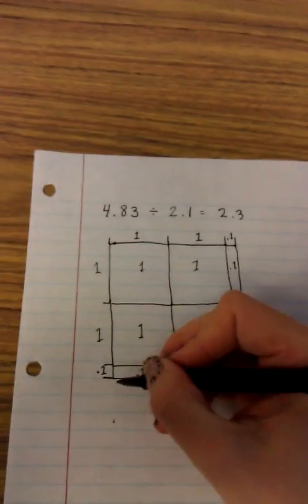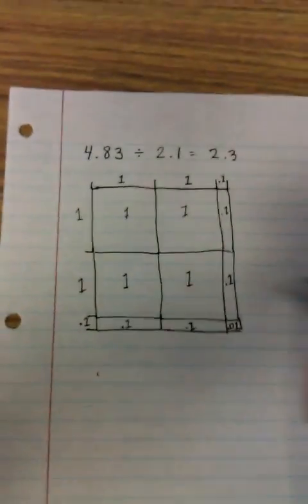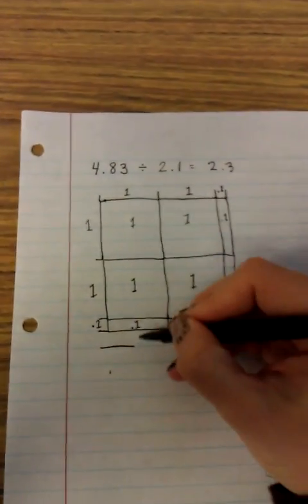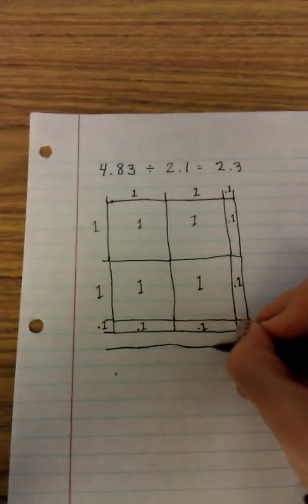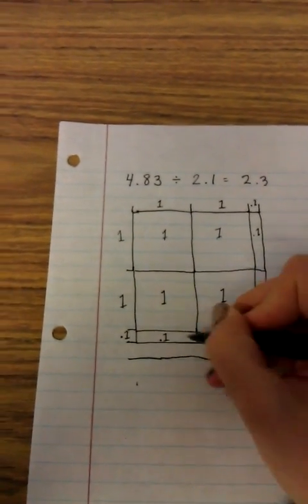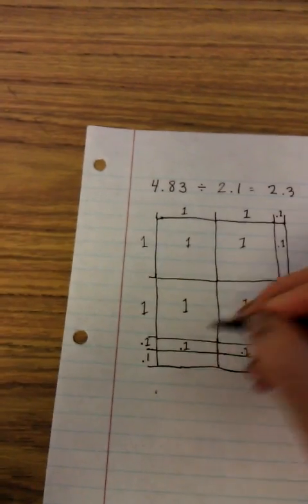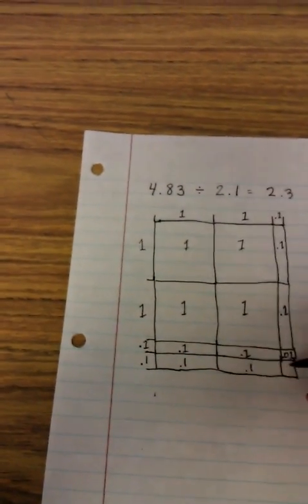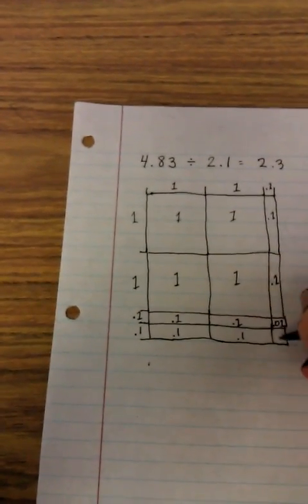It's not quite there yet so I'm going to do another tenth. Sorry, this is so messy. So now I have another two tenths which puts me up to six tenths and I have another hundredth which puts me up to two hundredths. So I have 4.62. Still not there yet but I'm going to do another one.